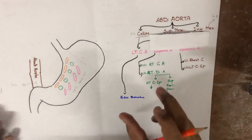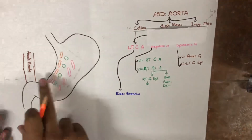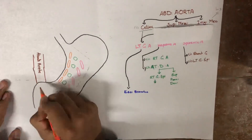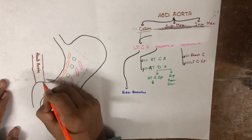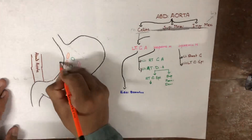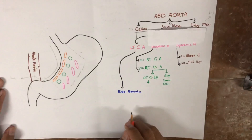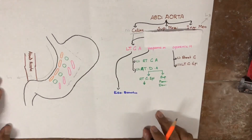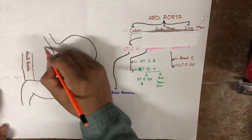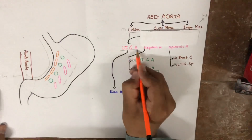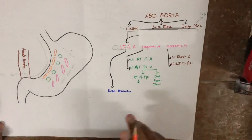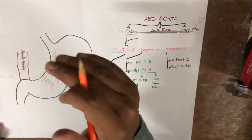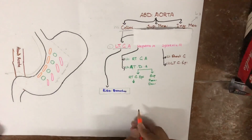The celiac artery has three main branches. It arises at the level of L1, and it gives the first branch, which is called the left gastric artery. The left gastric artery supplies the left border of the stomach, and it also supplies the esophagus. The part of the esophagus below the diaphragm is supplied by the left gastric artery.